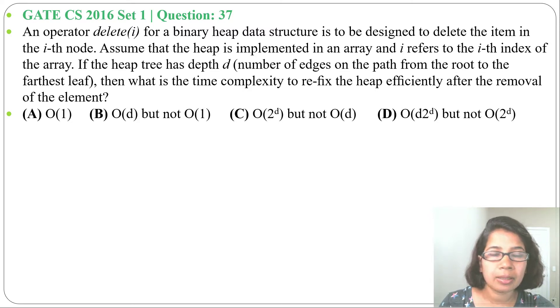The operation delete(i) for a binary heap data structure is to be designed to delete the item in the i-th node. Assume that the heap is implemented in an array and i refers to the i-th index of the array. If the heap tree has depth d,